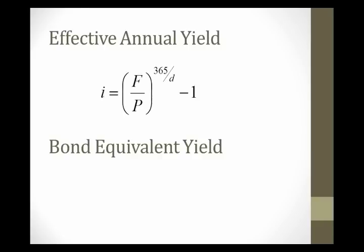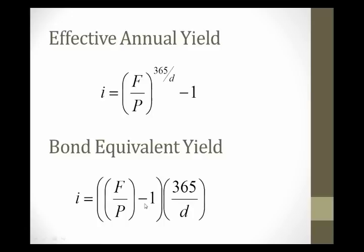So to compare, our effective annual yield we saw earlier looks something like that. Face value relative to price, adjusting for the fraction of the year. A bond-equivalent yield in the exact same situation, you notice we're multiplying by the fraction of the year. We're not compounding, but instead we're just multiplying to make an adjustment. So as you can imagine, without counting the compounding, you're going to get a smaller number.